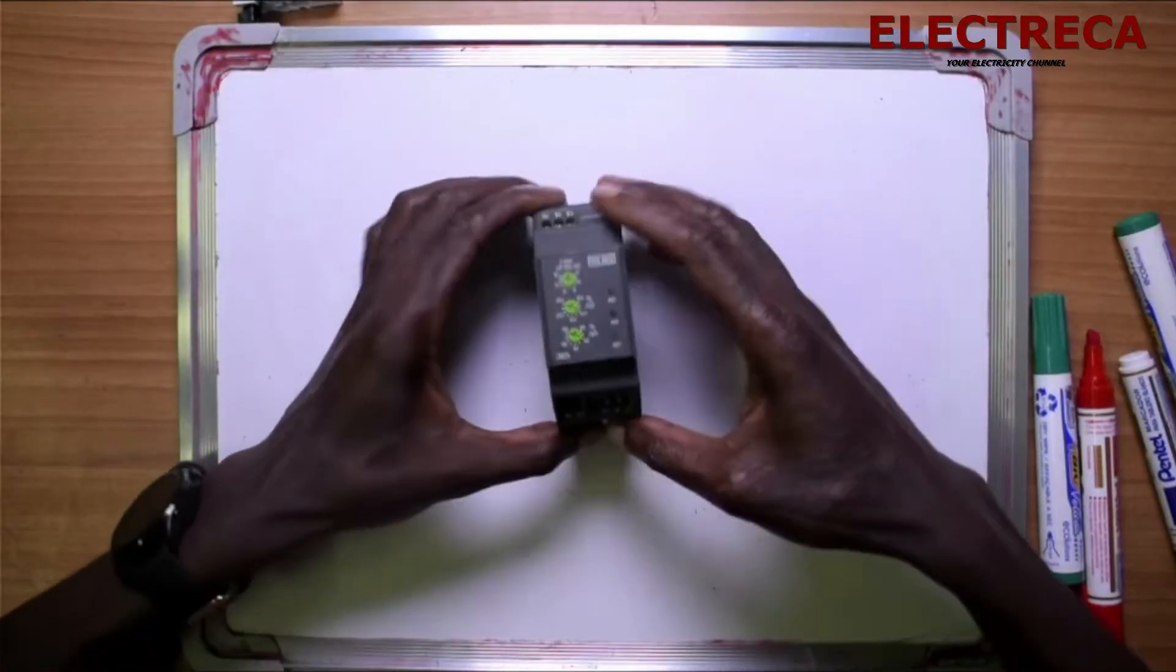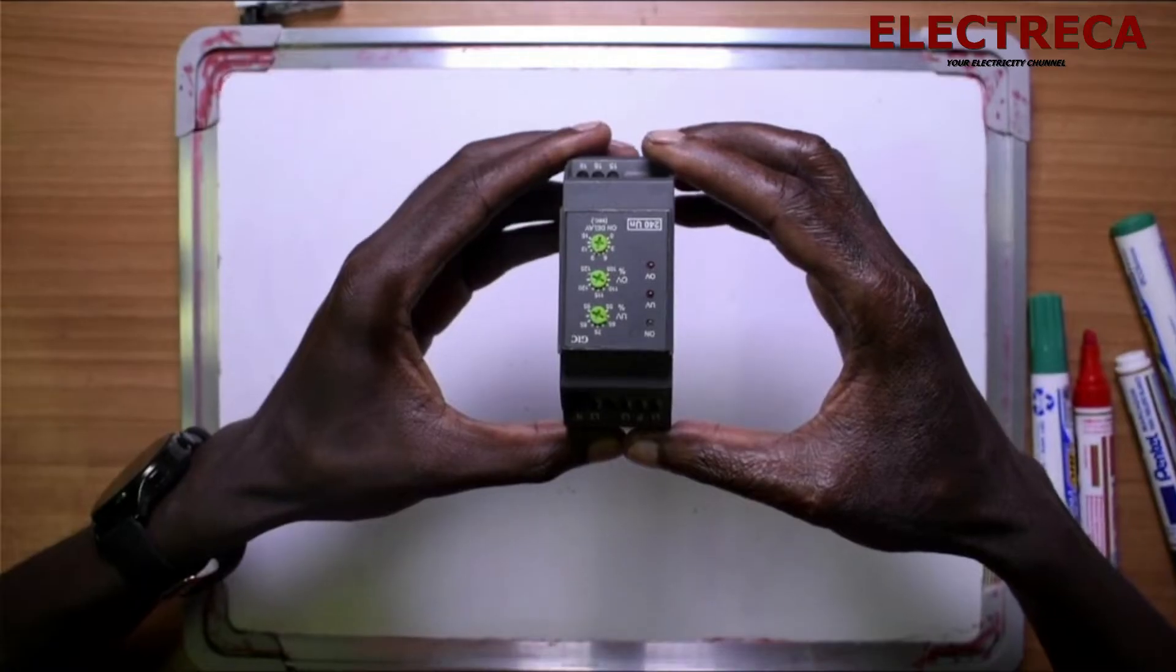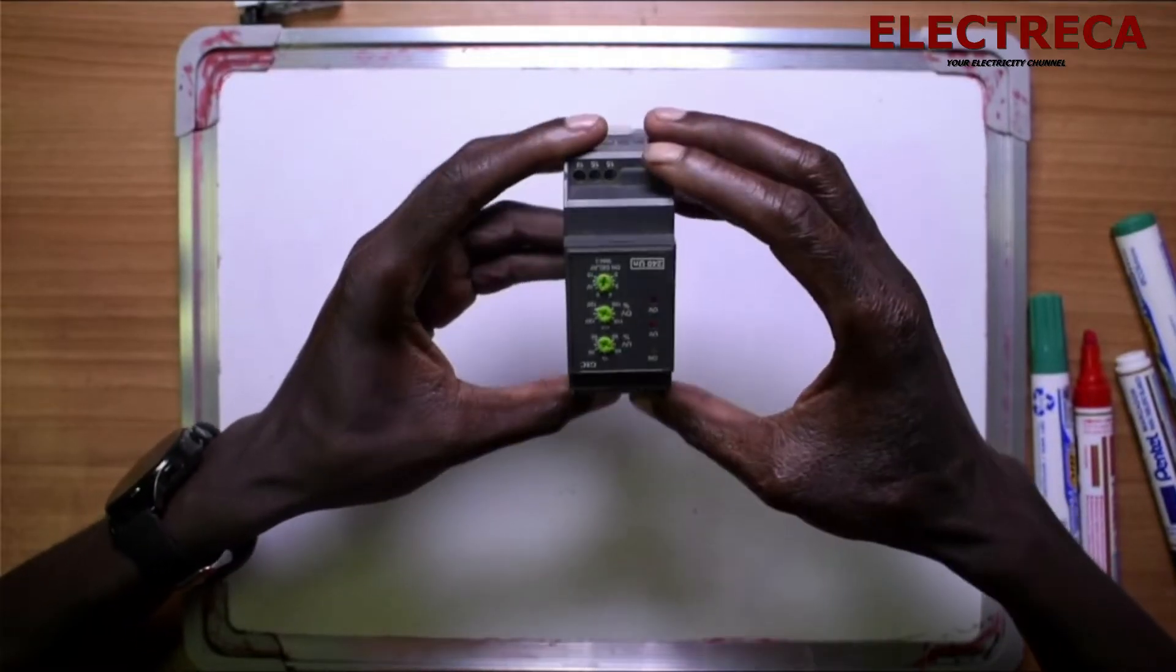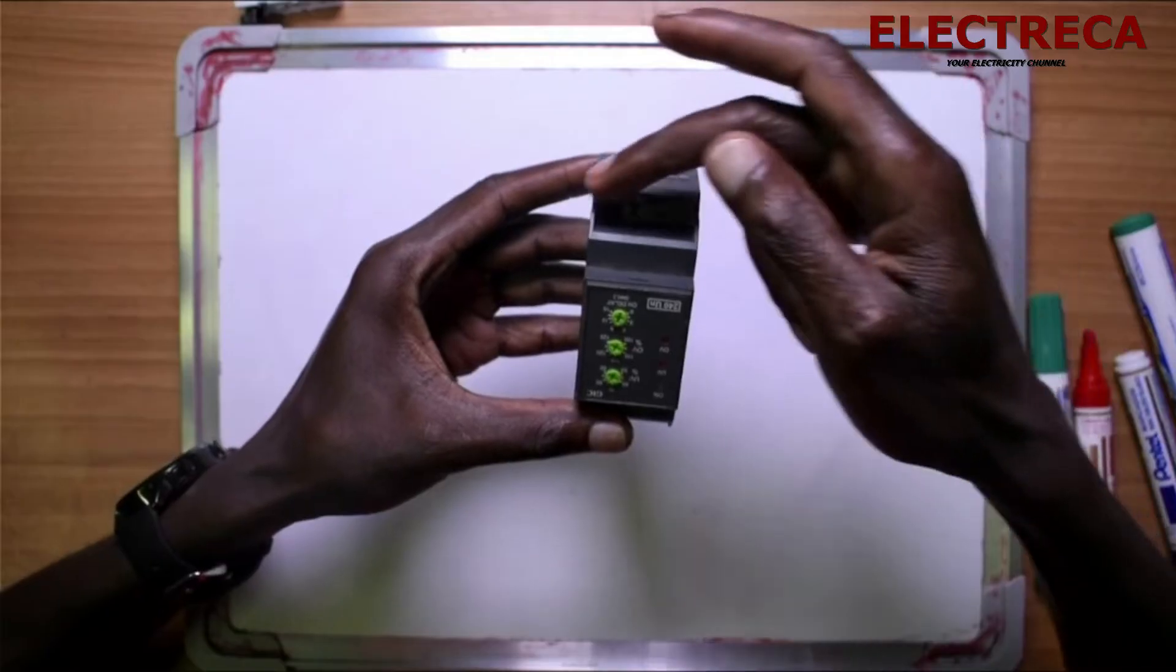Understanding circuits is really important, but mostly understanding how the device works and what you want to achieve. Now this guy I have here, this is a phase failure relay. You see it has three contacts here.